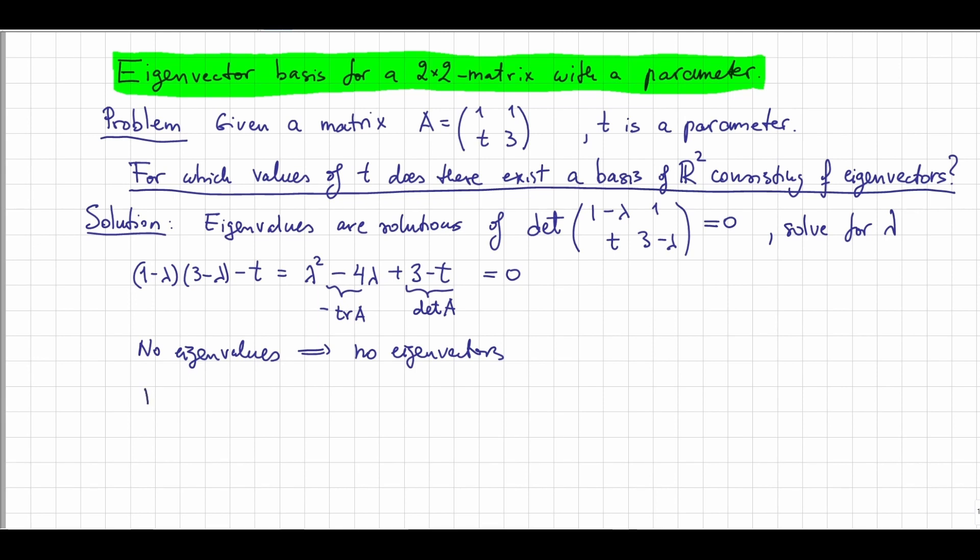So the discriminant of an equation λ² + pλ + q = 0 is p² - 4q. So here, the discriminant is p², which is 16, minus 4(3-t), which is the same as 4 + 4t. That has to be larger or equal to 0.